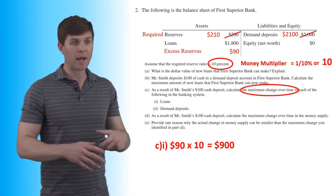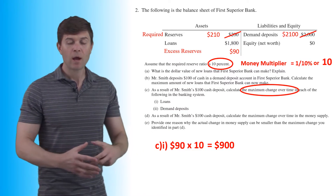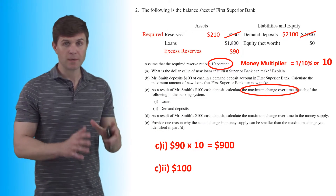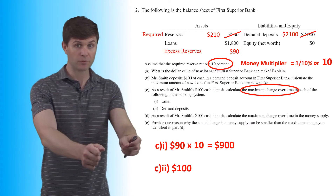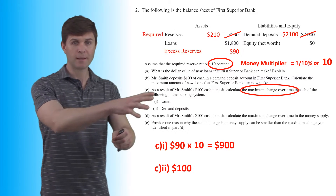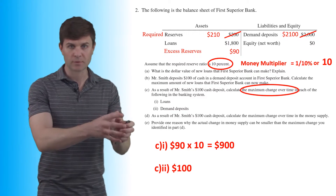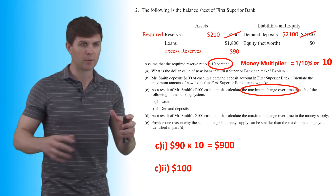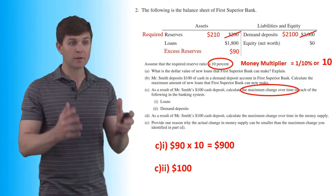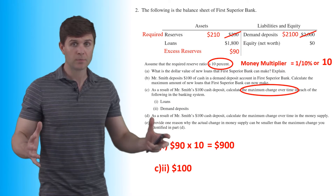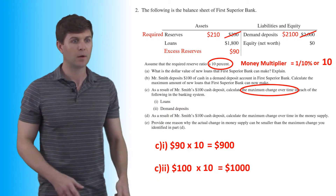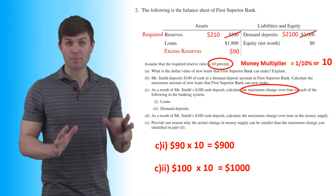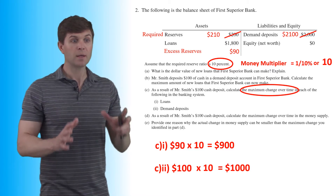The second part of Part C asks about demand deposits. This starts with Mr. Smith's initial $100 deposit, which then gets loaned out — 90% of it goes back into the system again and again. That $100 counts as part of the total demand deposits, and multiplied by 10, the maximum demand deposits created from that initial deposit is $1,000.